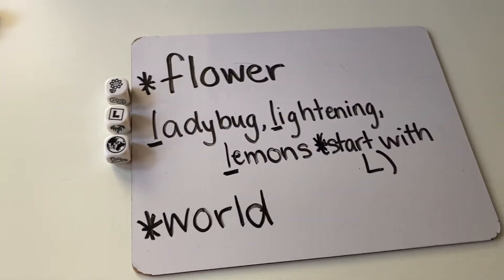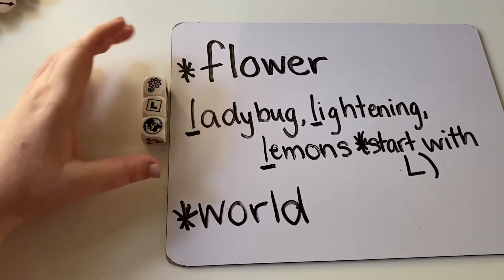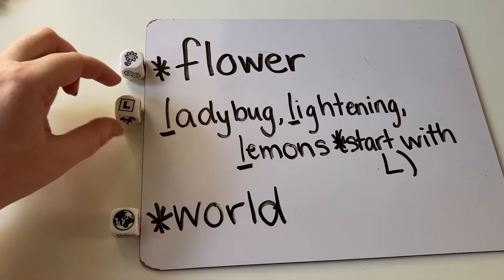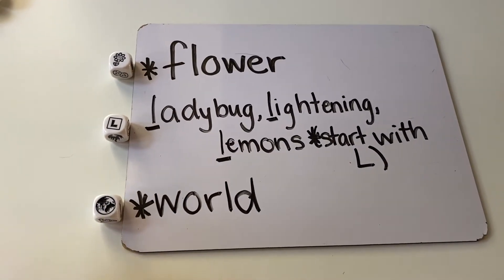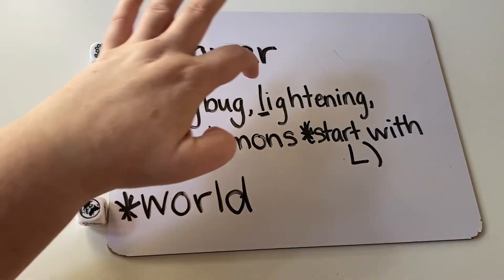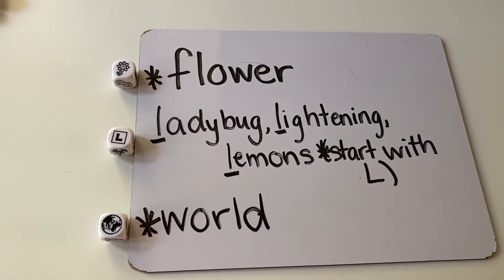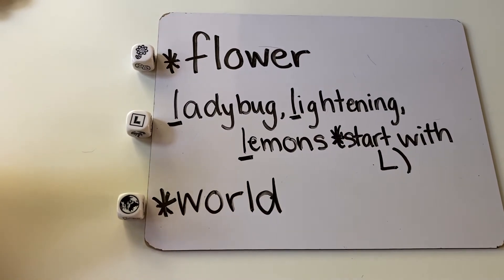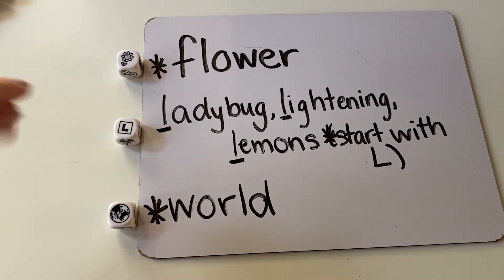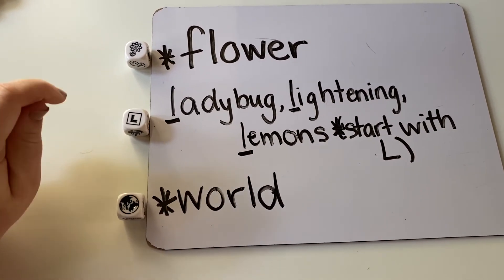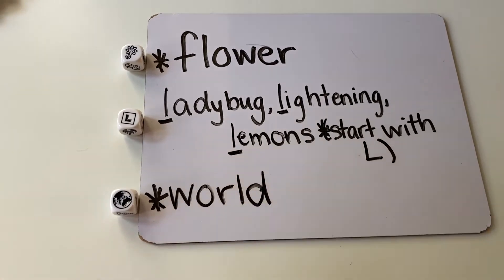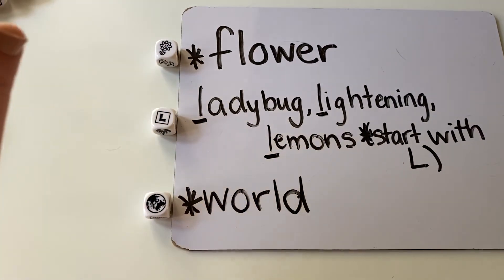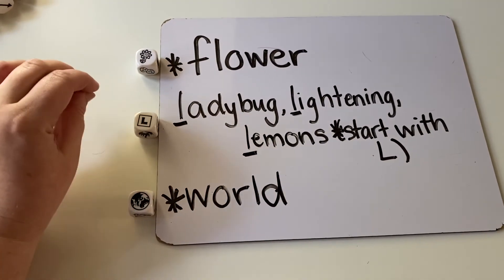So this is what you need to have for your story cubes today. You have world, you have flower, and you need to have a word that starts with L. These are just some examples — ladybug, lightning, and lemons — but I hope you make up some wonderful stories, Princeton Kay. If you would like to send us a video of you telling your story, please do. Draw a picture once you have finished telling your story, using these words or whatever you come up with, and then send Mrs. Glory and me a picture of your drawing so that we can see.